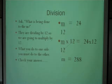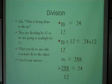Now we check our answer: 288 divided by 12 is 24 — and that is correct.